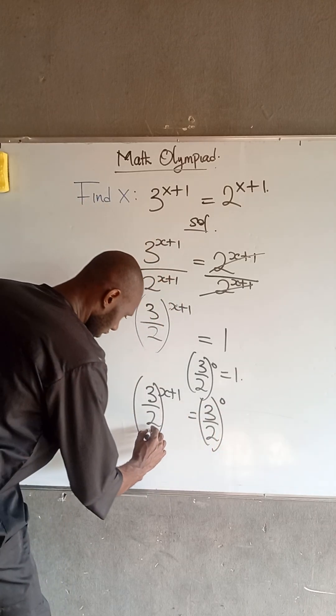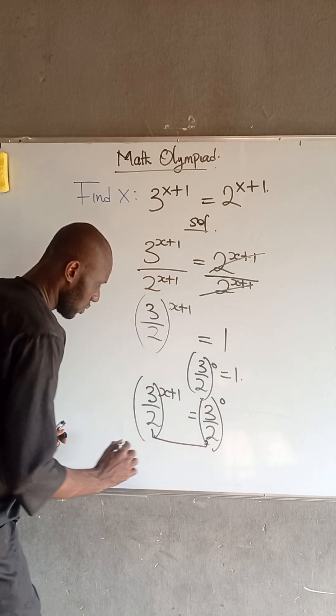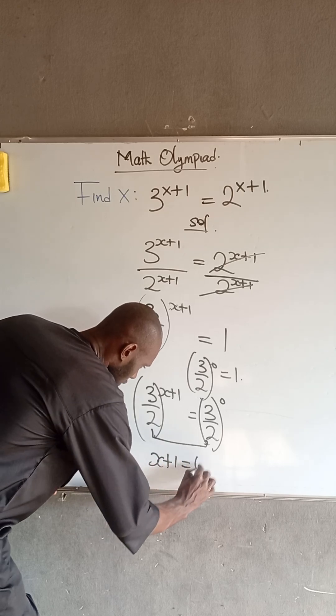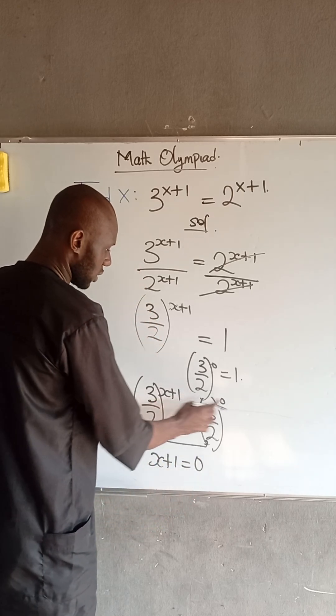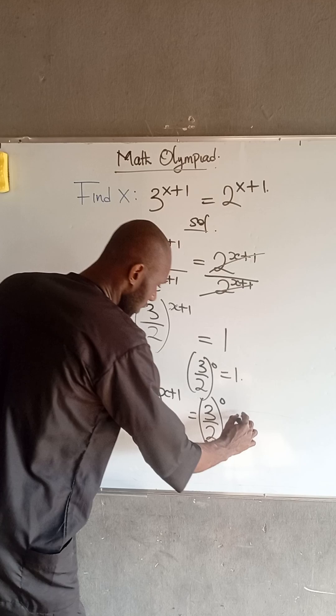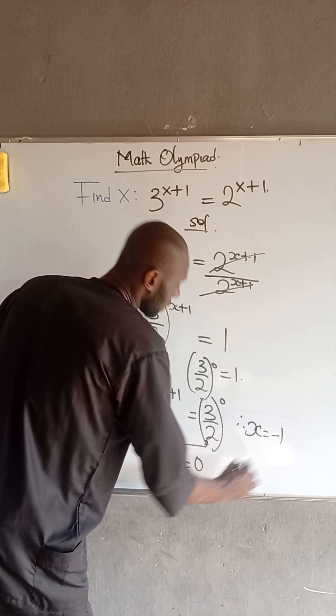So at this point, since their bases are the same, we have that x plus 1 is equal to 0 because we are going to equate the index. So it follows that x is equal to negative 1.